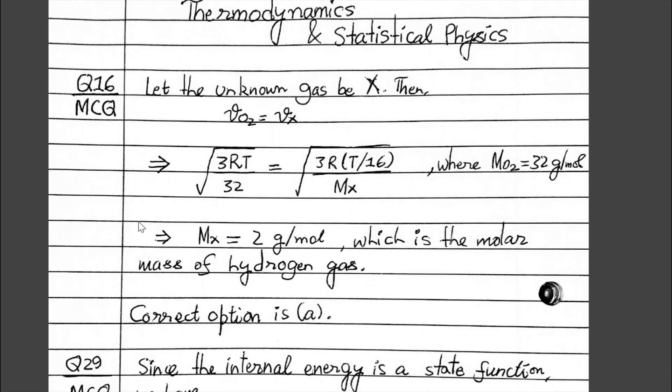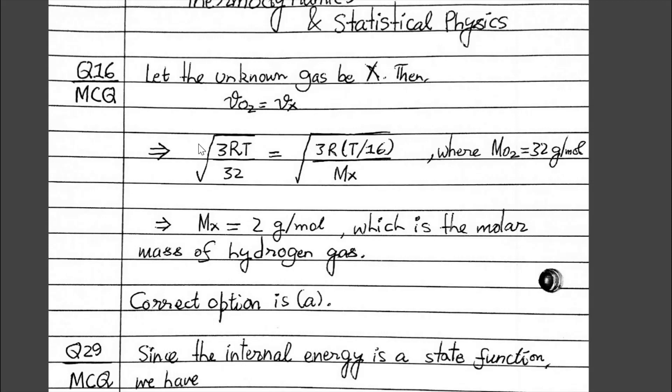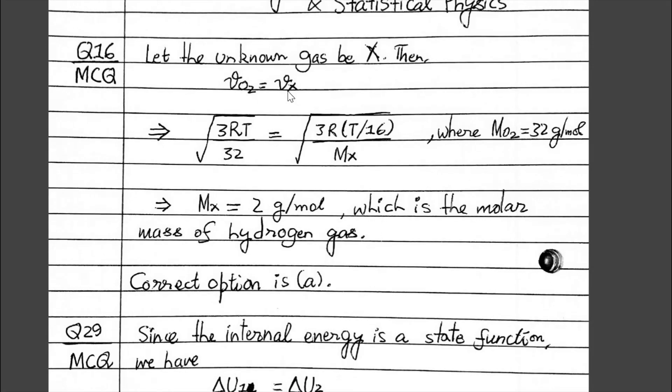The first question is from the MCQ section. You can see and check with your response sheet. The question is from kinetic theory of gases. Here, we need to equate the RMS velocity of oxygen and element X to find which element is X.